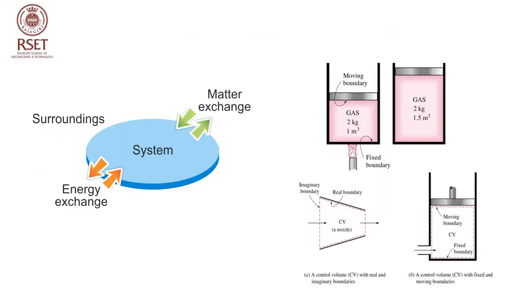Now we will refresh what we have learned in junior classes. A system is a region where we are doing our observation, and anything other than the system is called the surroundings. Between system and surroundings there can be both matter exchange as well as energy exchange. Depending upon how that exchange happens we can define it as an open system, closed system, or isolated system.